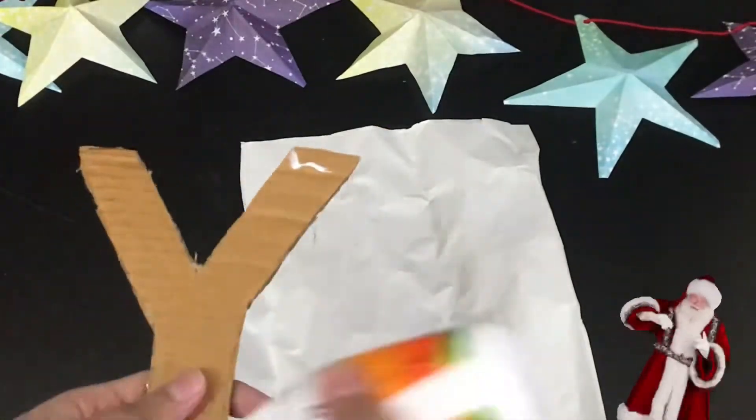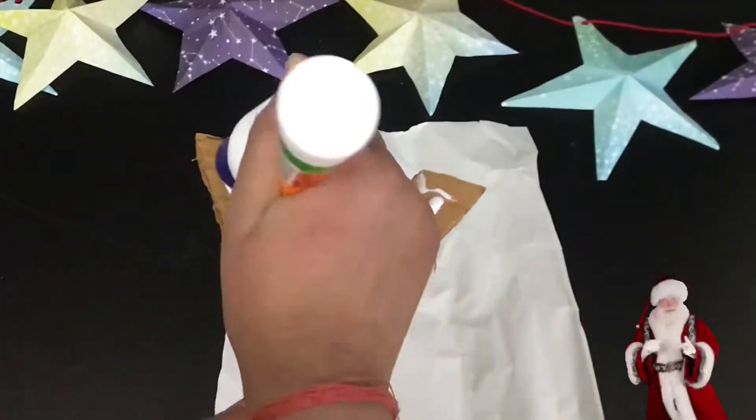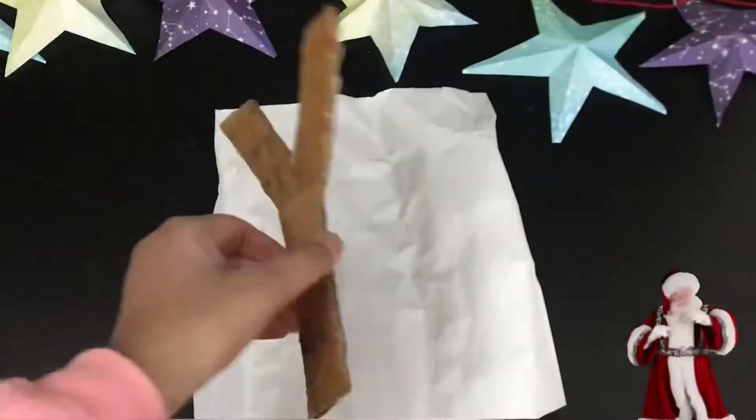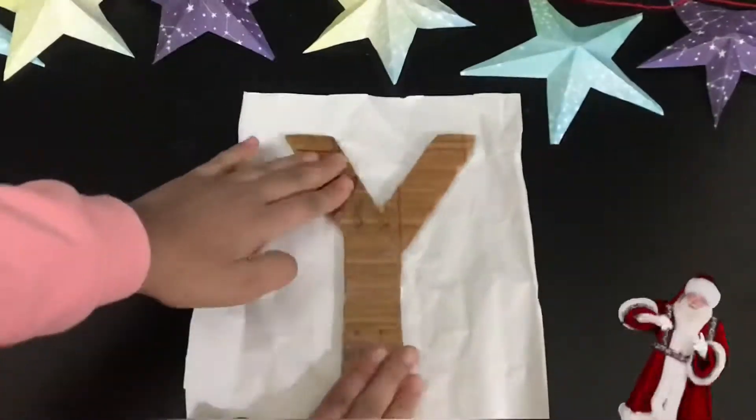A simple trick to cover them is to apply glue in the front part of the letter and then glue it on the gift wrapping sheet. Cut off the remaining part.